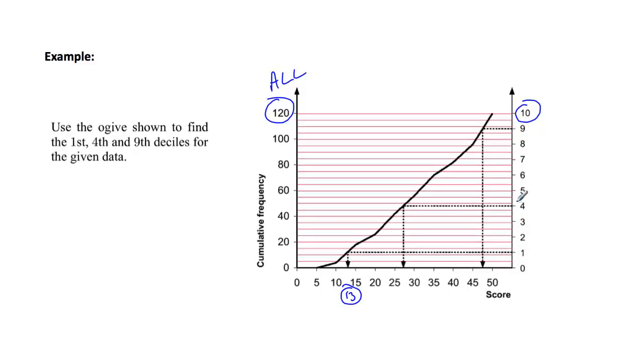So the 40% or the fourth decile down to here and that number even though you can't see it is 27. So 40% of the scores are below 27 and 60% are above. And finally we've got our 9th decile where 90% of the scores are below this point here and this point here is 48.